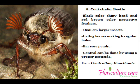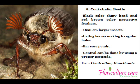Cock Chafer Beetle has a black shiny head and red-brown color protective wing covers. Normally it is about 5 cm, making it a larger insect. It eats leaves, making irregular holes, and additionally in the evening it eats rose petals. This rose pest can be controlled by using a proper pesticide like Permethrin or Dimethyloid.